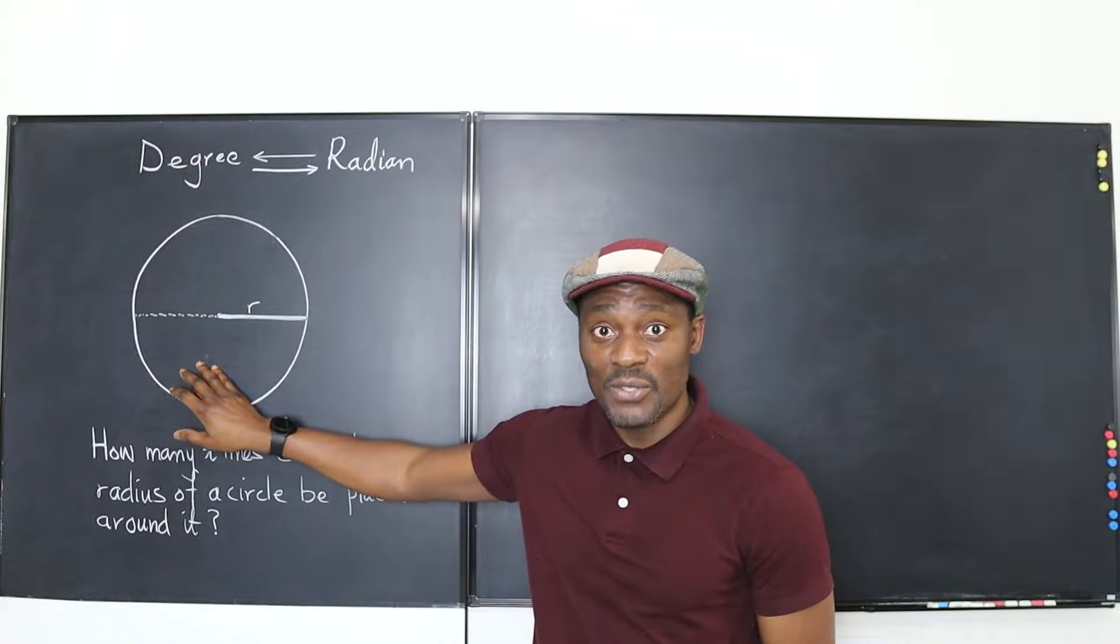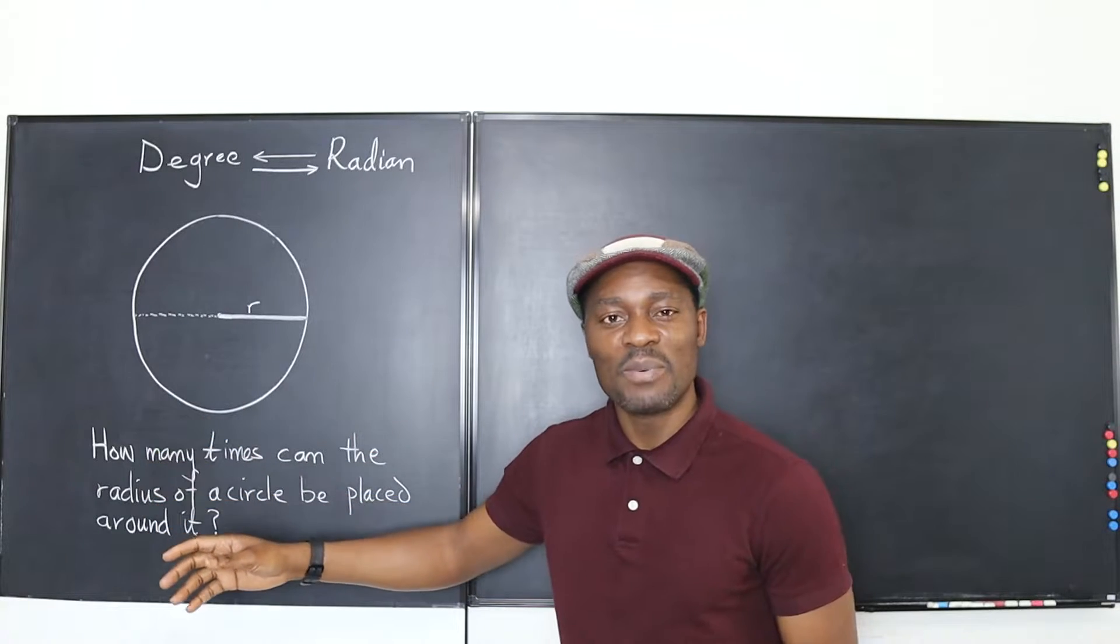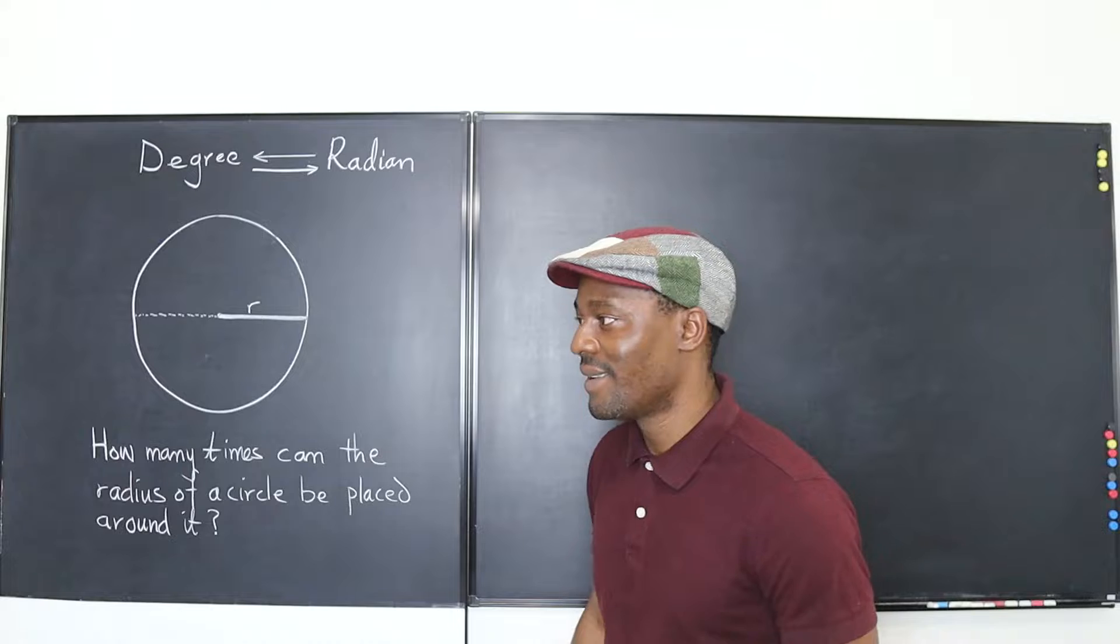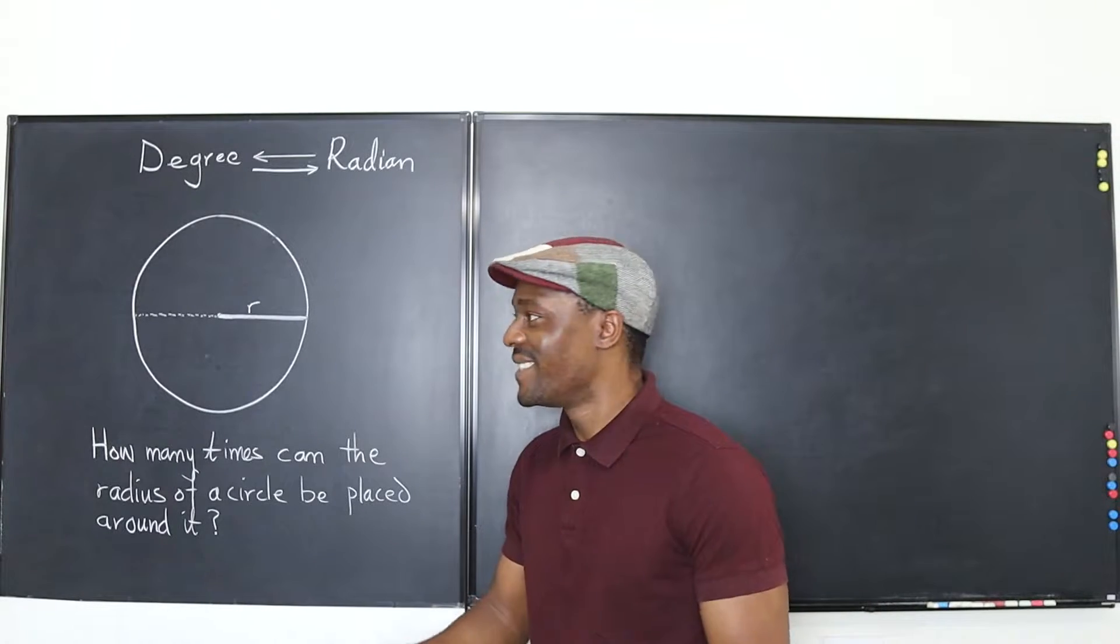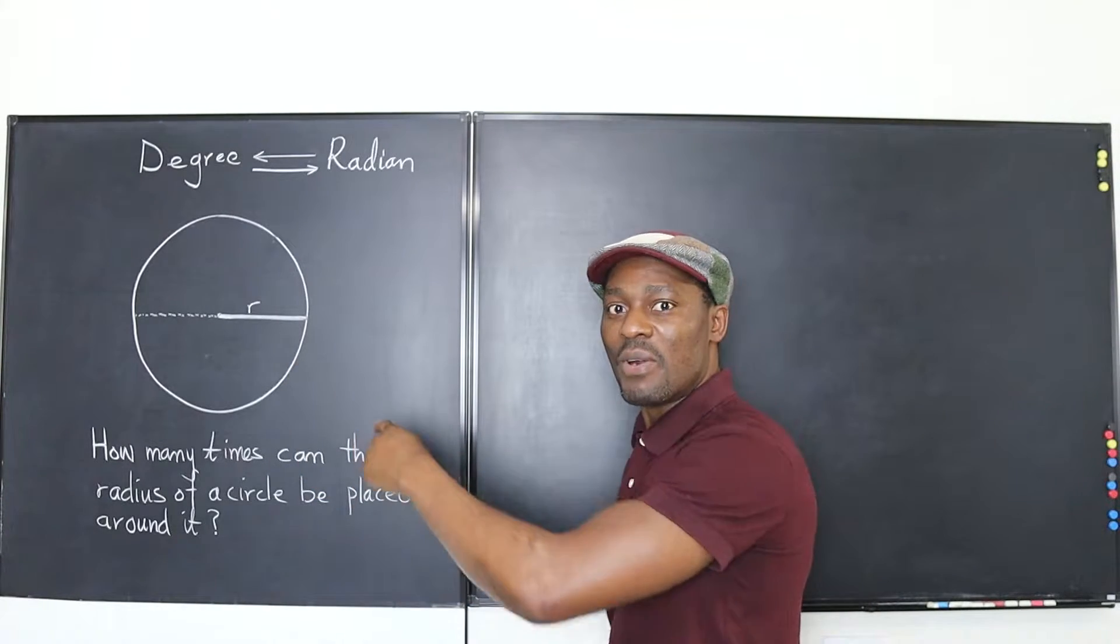So I have an imperfect circle here. Well all circles are imperfect, because pi never ends. And this is where the problem starts.